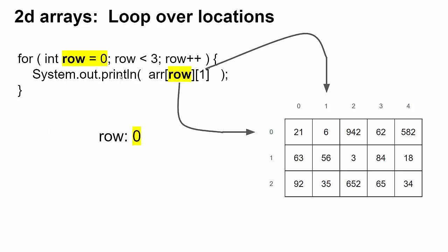Row starts out at zero. So when row starts out at zero, it's like accessing the array at row zero, column one, which would be the number six.